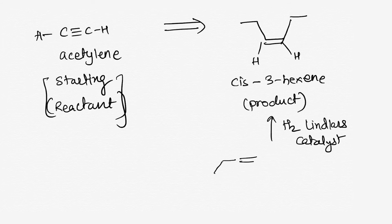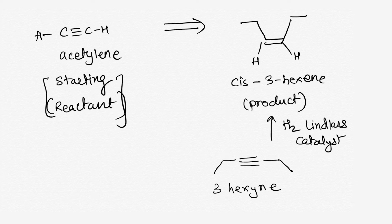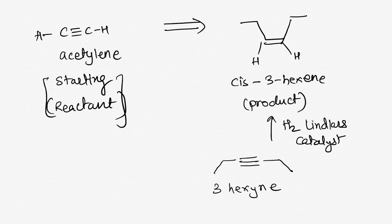The alkyne that gives cis-3-hexene upon hydrogenation with Lindlar's catalyst would be 3-hexyne. But we haven't yet converted acetylene to 3-hexyne. Acetylene has 2 carbon atoms and 3-hexyne has 6, so we need to add carbon atoms. We know an alkylation reaction which adds carbon to an existing carbon-carbon triple bond.